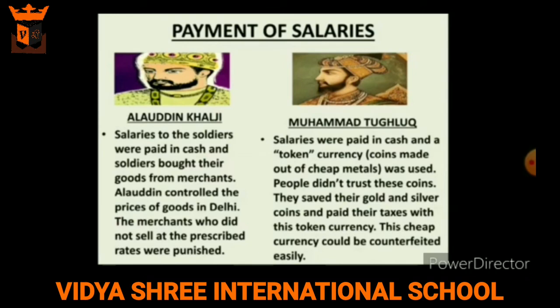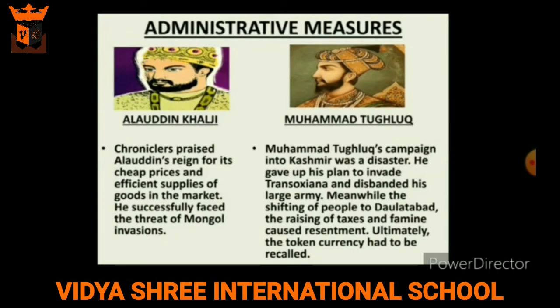This additional taxation coincided with a famine in the Doab area. Regarding payment of salaries: in Alauddin Khalji's time, salaries to soldiers were paid in cash, and soldiers bought their goods from merchants at prescribed rates — if a merchant charged more, the merchant would be punished. In Muhammad Tughlaq's time, salaries were paid in cash and in token currency — coins made from cheap metals — but people did not trust these coins. They saved their gold and silver and paid their taxes with the token currency.